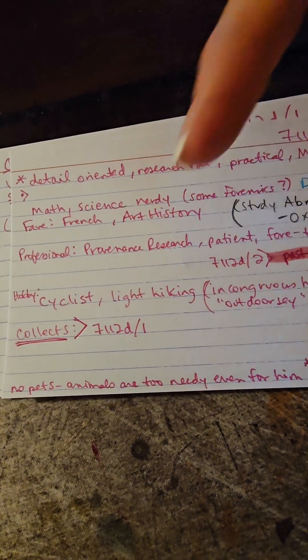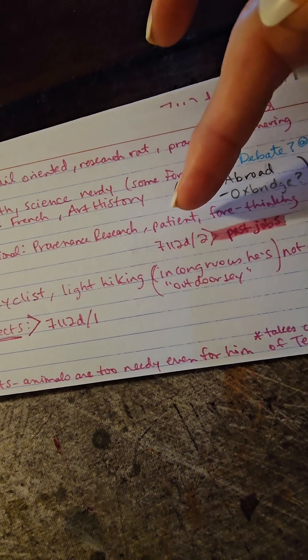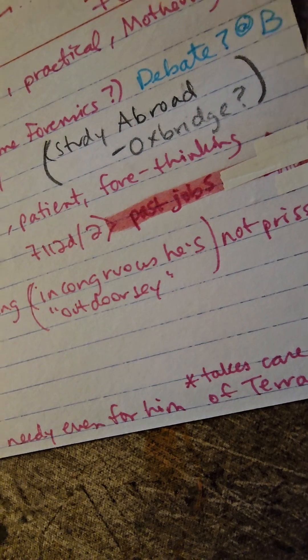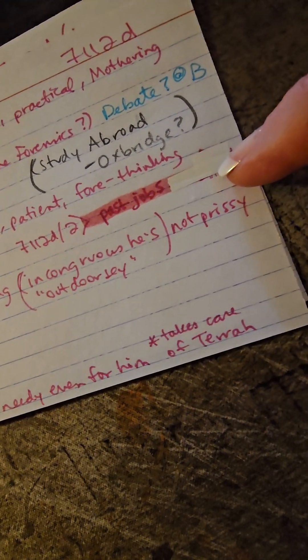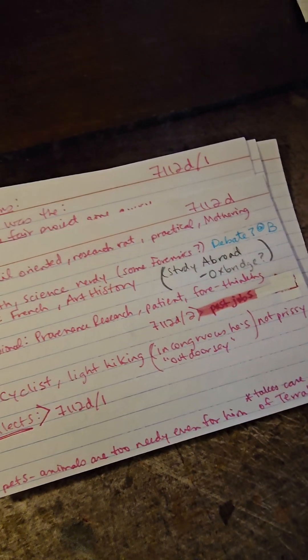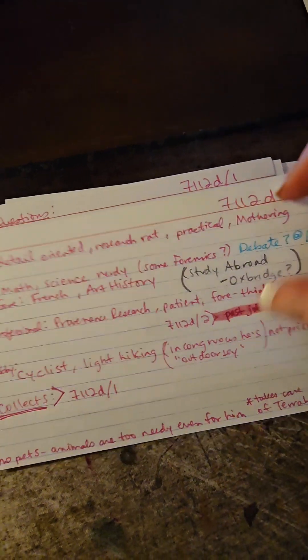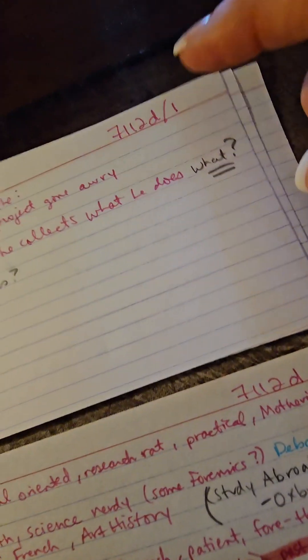Let's continue. Professionally, he's a provenance researcher, he's good at being patient, he's good at forethinking. I have a little note here that says past jobs. Now you'll see that's whited out. We are allowed to make mistakes because initially I listed out some things on the back of that card, and then I reminded myself, uh-uh-uh, you don't want to go onto the back of the card. You want to create a branch off of that card.